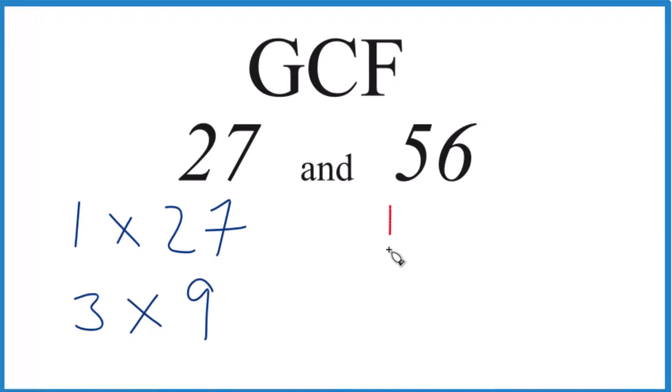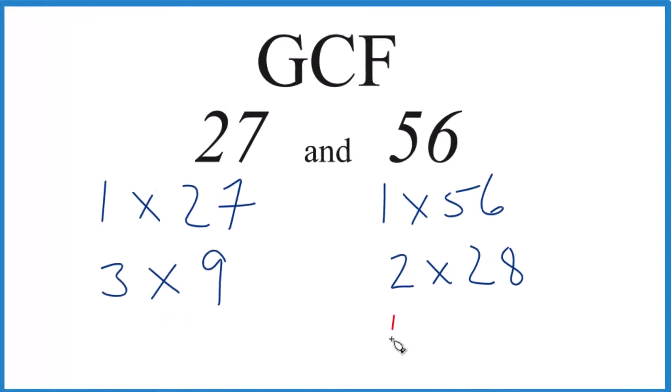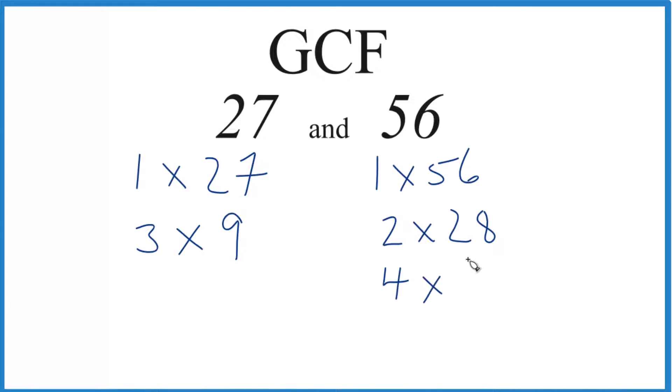56: 1 times 56, then we have 2 times 28—that would work. How about 4 times 14? That's 56. And finally, 7 times 8.